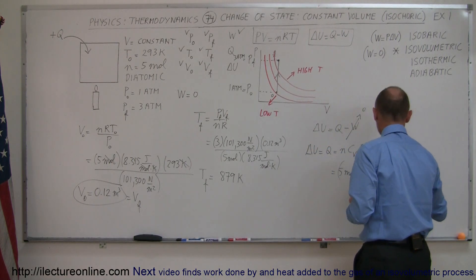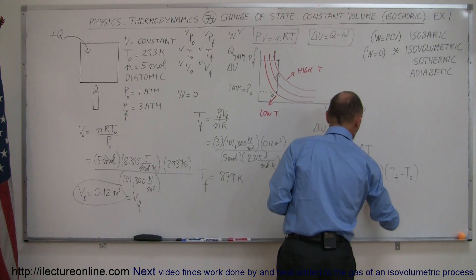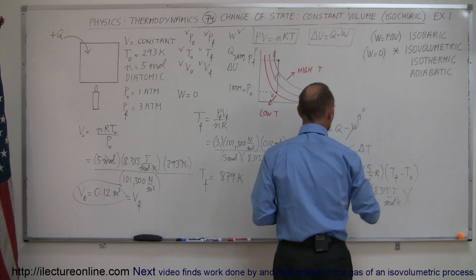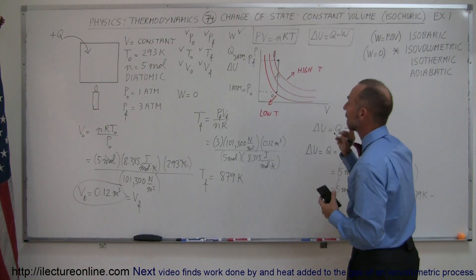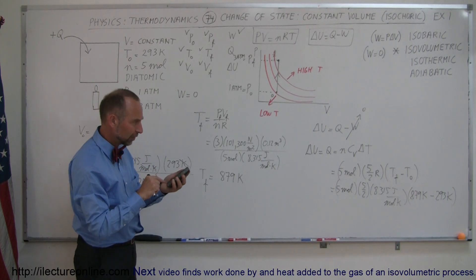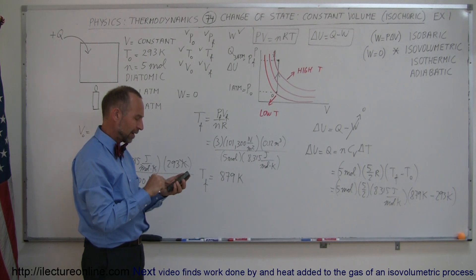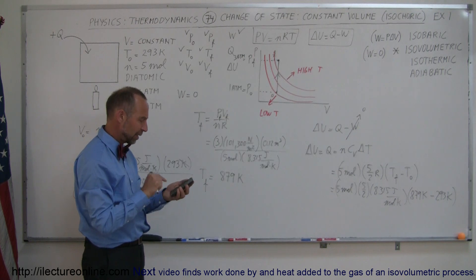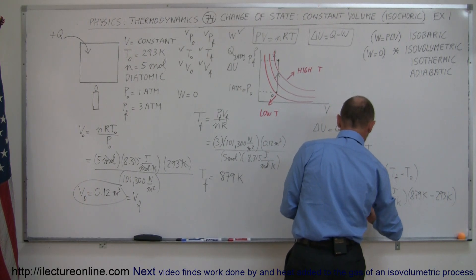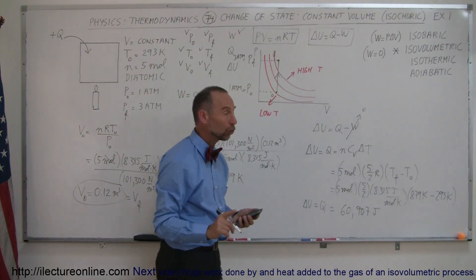The temperature change is T final minus T initial. Plugging in: 5 moles × (5/2) × 8.315 joules per mole·Kelvin × (879 − 293) Kelvin = 5 × 2.5 × 8.315 × 586 = 60,907 joules. This is the change in internal energy, which is also equal to the heat added to the gas.